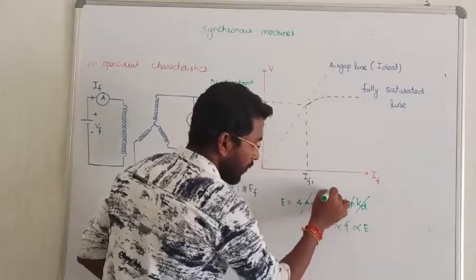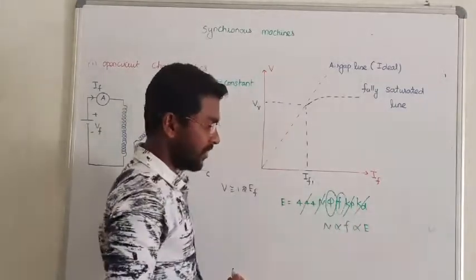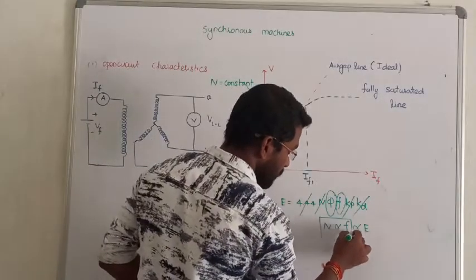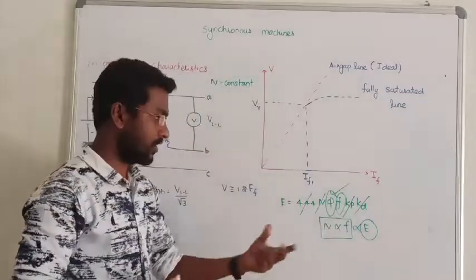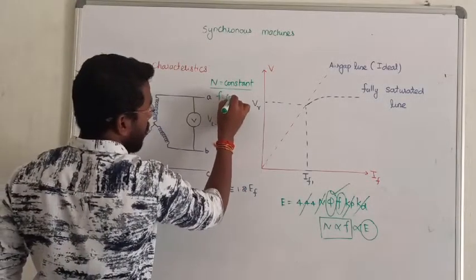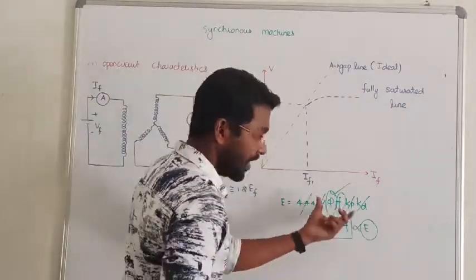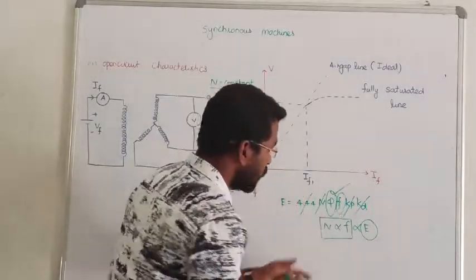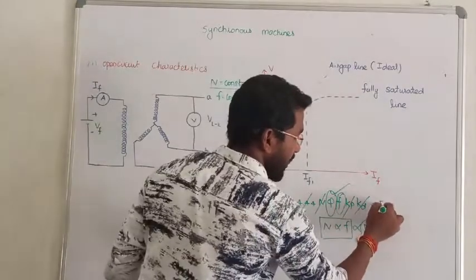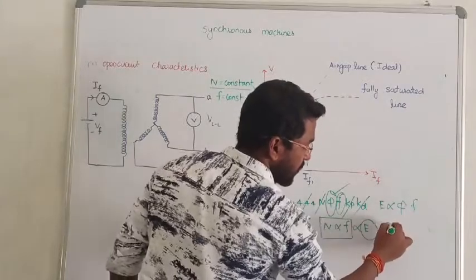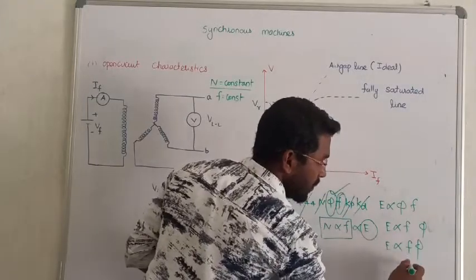We are going to vary the value of flux. We are fixing the value of frequency. So the conclusion is: frequency is constant, speed is constant. In such a case, we are going to vary the value of induced EMF by varying the value of flux. Speed and frequency of the machine are both maintained as constant. EMF becomes directly proportional to flux when frequency is constant, and directly proportional to frequency when flux is constant.